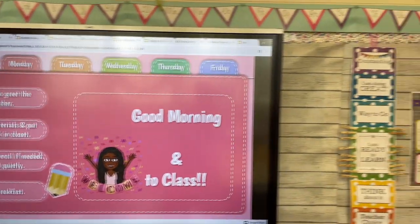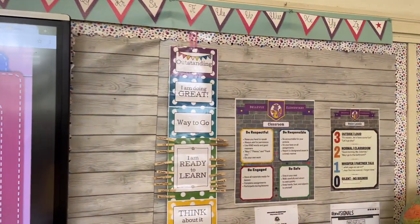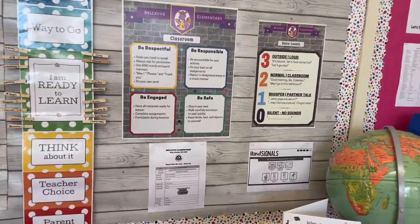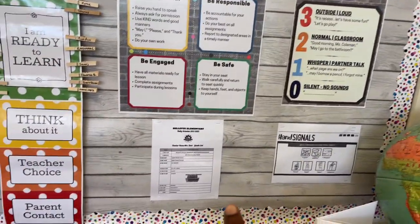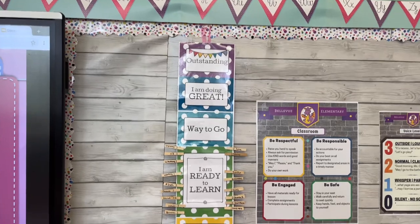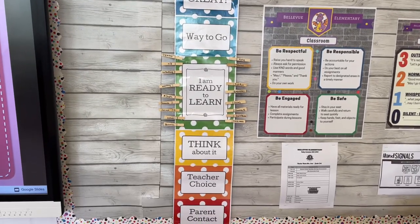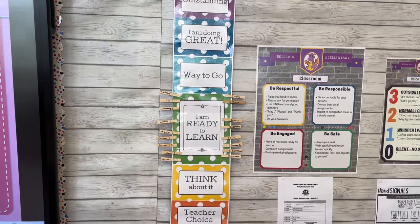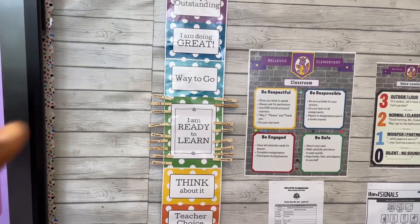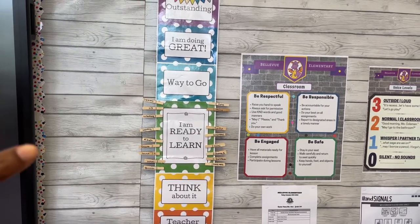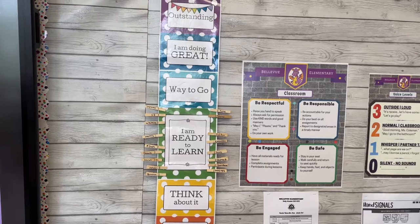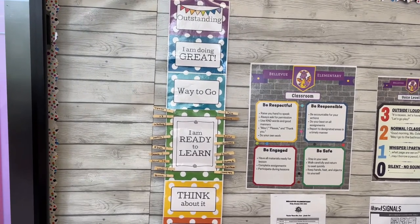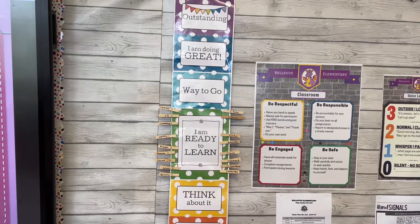Just to our right we have our behavior management chart where we're showing students the expectations. They know their voice levels, we have hand signals that they can use in our classroom, and we have our schedule. All students start on green and as they progress — giving wonderful answers, behaving, and staying on task — I'll clip them up. As they clip up, they'll earn extra coins for the day. Once they get to 10 coins, they're able to pull from our treasure chest.